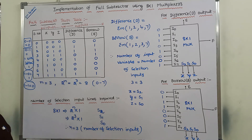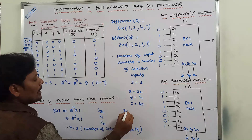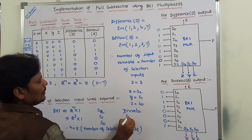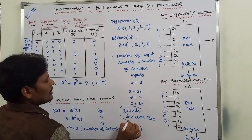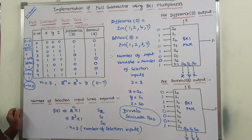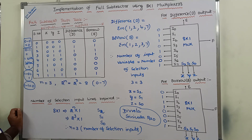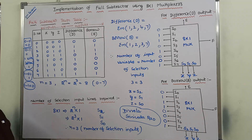This is the procedure we have to follow for implementing full subtractor using 8 by 1 multiplexer. Thank you one and all for watching this video. If you like this video, please click on the like button and click on the bell icon to get future updates. After subscribing my YouTube channel, Divvela Srinivasarau, click on the bell icon to get future updates. If you have any doubts, please put them in the comment section. Please subscribe, forward this channel to your friends and classmates. For remaining videos, please go to the playlist STLD or DLD or Digital Electronics Course. Thank you.